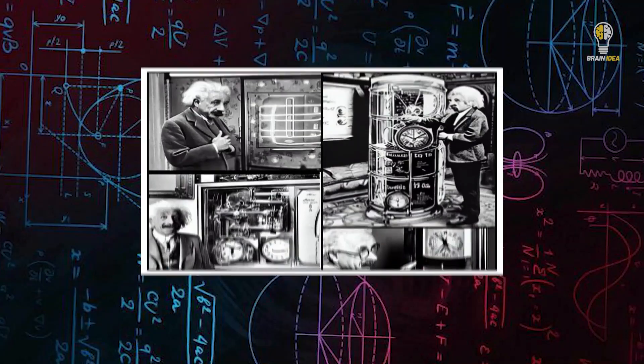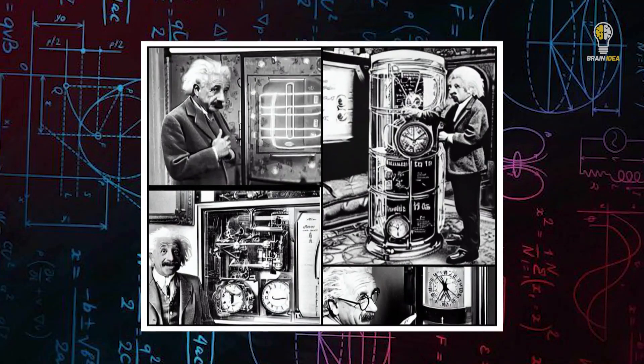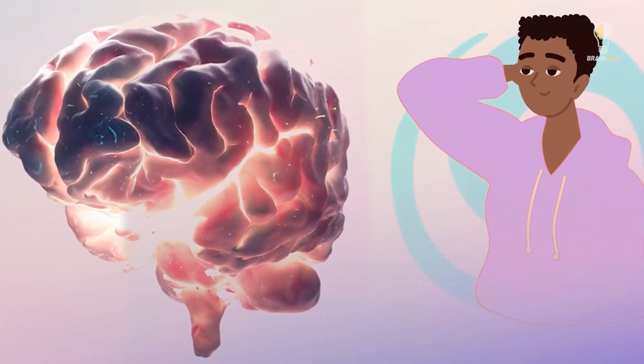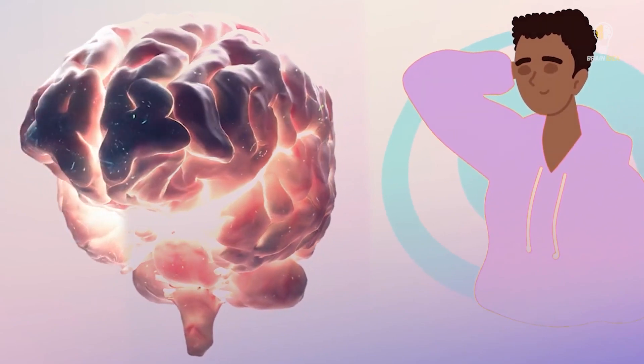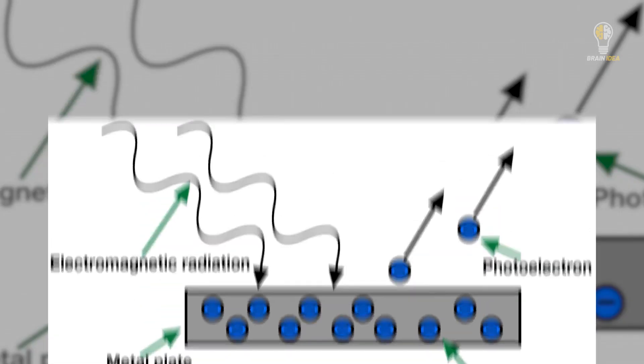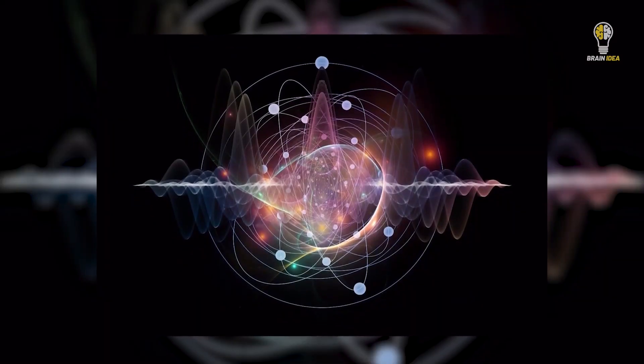When it comes to the differences of Albert Einstein, his discoveries are the things that differentiate him from a normal human. The theory of relativity, the photoelectric effect, the unified field theory, etc., differentiate Albert Einstein's brain from a normal human.